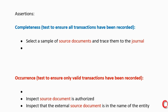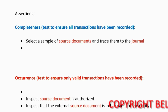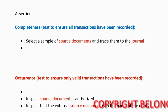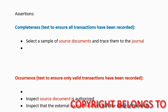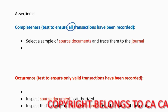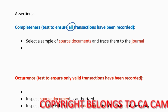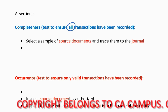Here we have our assertions as the headings with the procedures underneath that are going to help us test that assertion. Our first assertion is completeness, and we need a test to ensure that all transactions that should be recorded have been recorded.